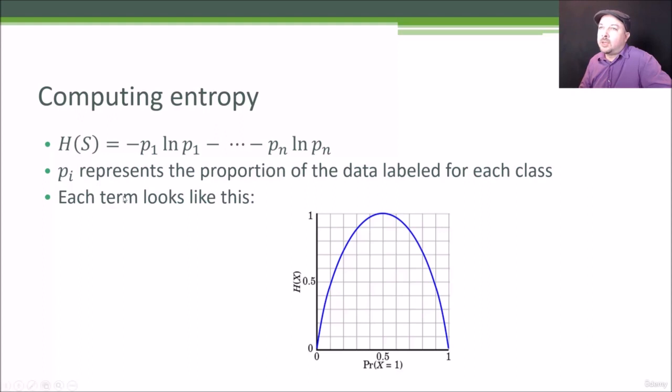Each term p represents the proportion of the data that is that class. If you plot what each term looks like - this negative p sub i times the natural logarithm of p sub i - it'll look something like this. And you add these up for each individual class.